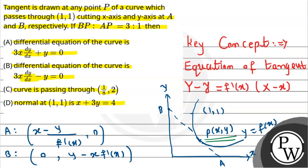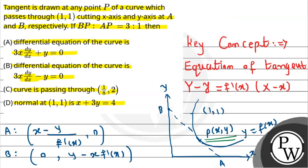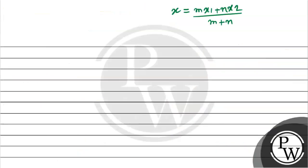P internally divides the line AB into two parts. So by using the section formula, x coordinate equals (m·x1 + n·x2)/(m + n). This is the section formula we use here.